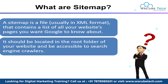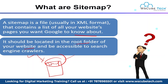A sitemap is a file — usually a text file in XML format — which contains a list of all your website pages you want Google to know about. It should be located in the root folder of your website and be accessible to search engine crawlers. When a crawler first visits your website, they first find your sitemap and then crawl every URL mentioned in it.